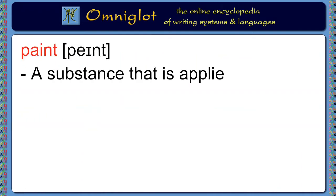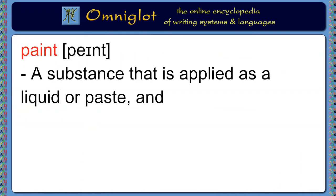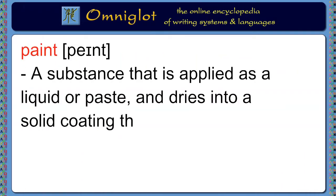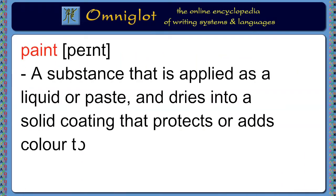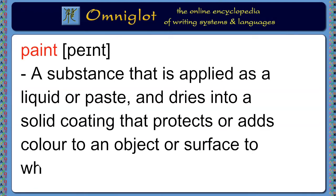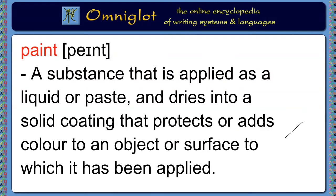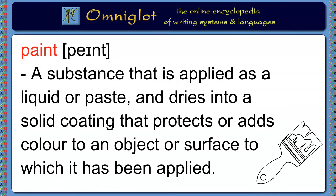Paint is a substance that is applied as a liquid or paste, and dries into a solid coating that protects or adds colour to an object or surface to which it has been applied.